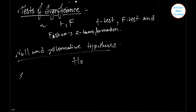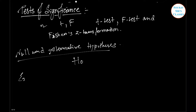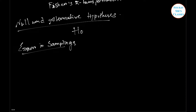Now we move to errors in sampling. The main objective in sampling theory is to draw valid inference about the population parameter on the basis of the sample result. In practice, we decide to accept or reject a lot after examining a sample from it. As such, we are liable to commit two types of error. Type one error: reject H₀ when it is true.